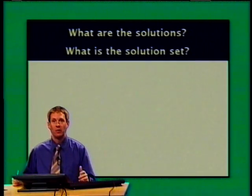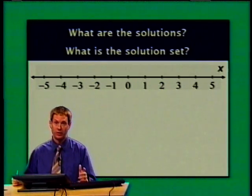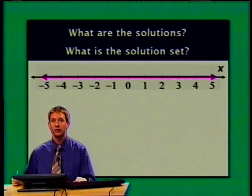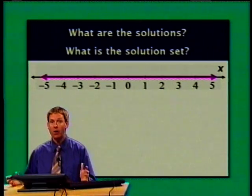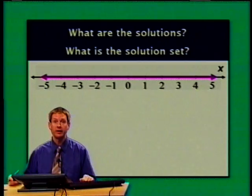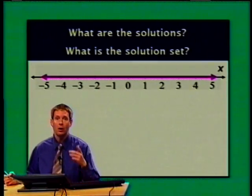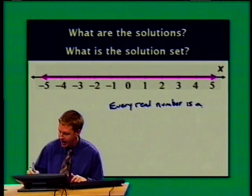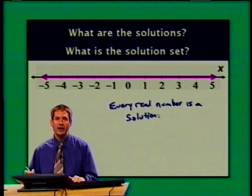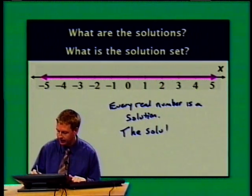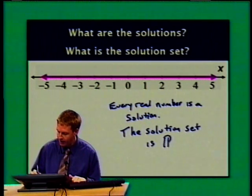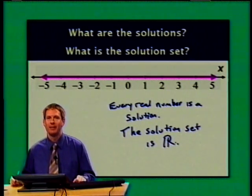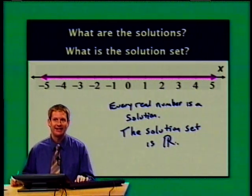Every real number is a solution. On the number line, I indicate this by drawing a line over the entire x number line with arrows at each end — no matter where you are on the number line, you have a solution. The solution set is the set of all real numbers. There are an unlimited number of solutions, but only one solution set containing all those solutions.